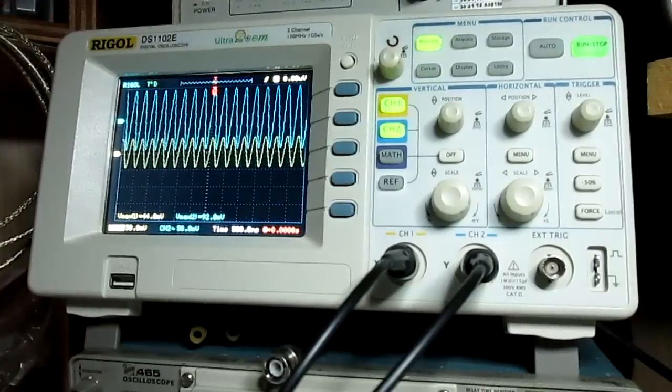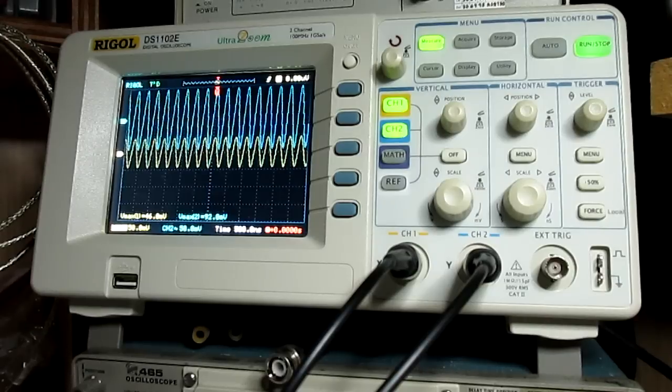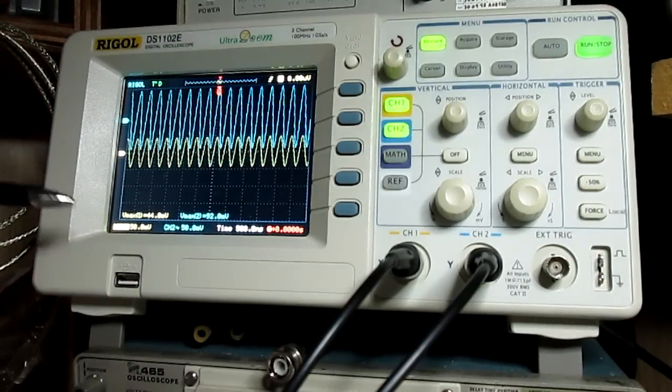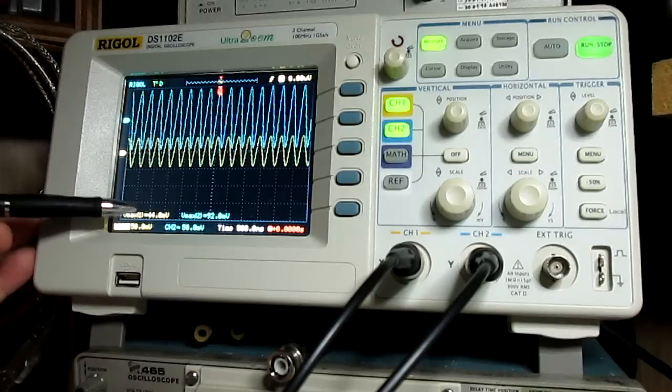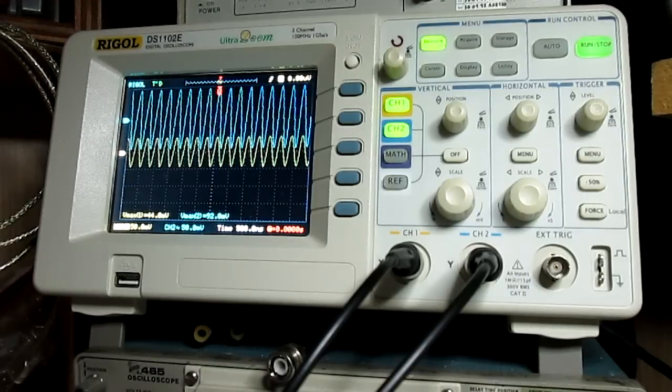Over here on the scope I've got two waveforms. The teal waveform is basically the source voltage, and then the yellow waveform is the junction point. This scope is great at measuring voltages but it toggles I've noticed, like between 44 and 46.